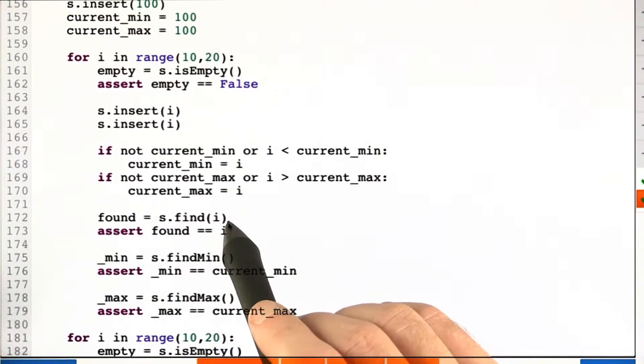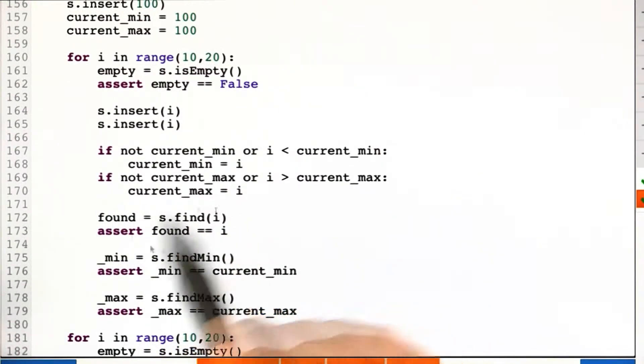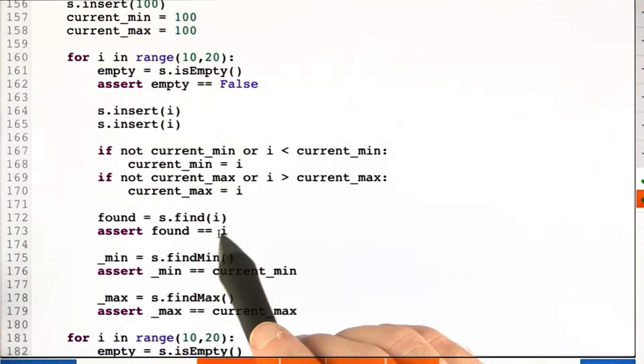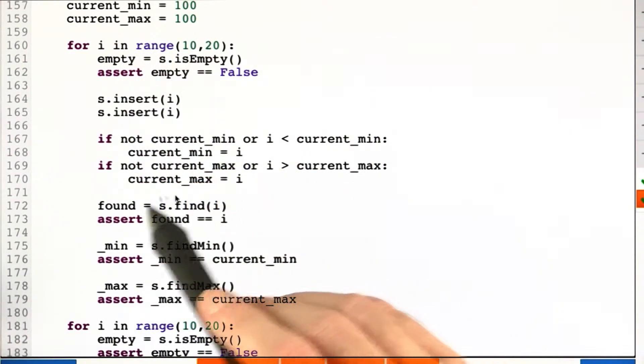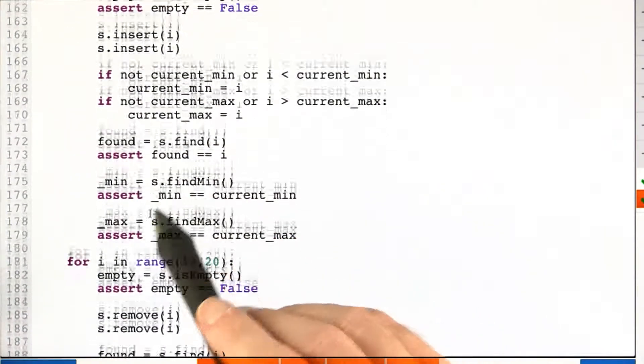Now we check that that has been inserted by trying to find it in the splay tree. And we assert that that should be found, and find should return the current of the for loop as found. And this is what we assert here.